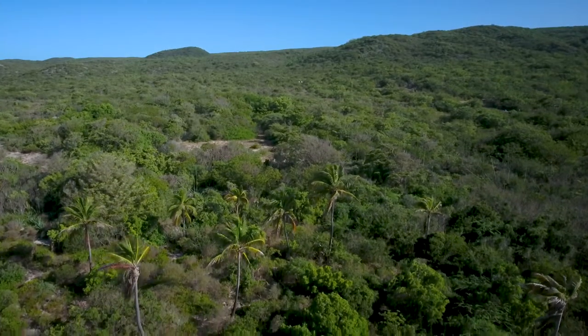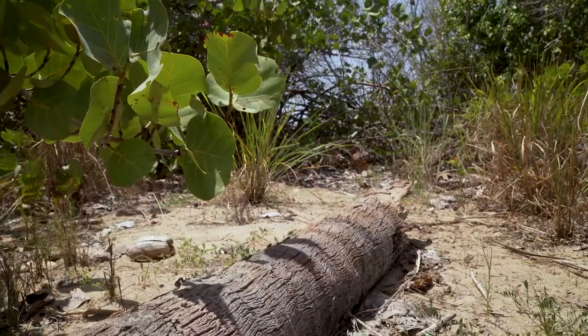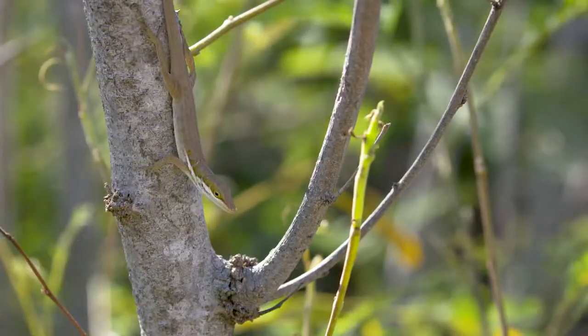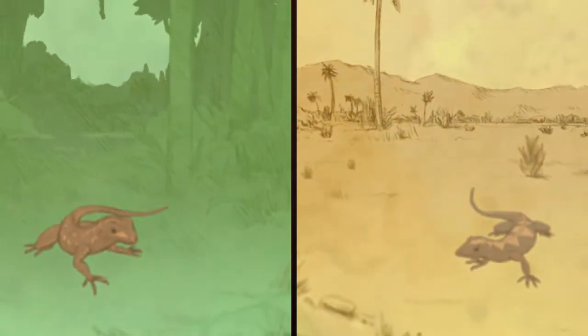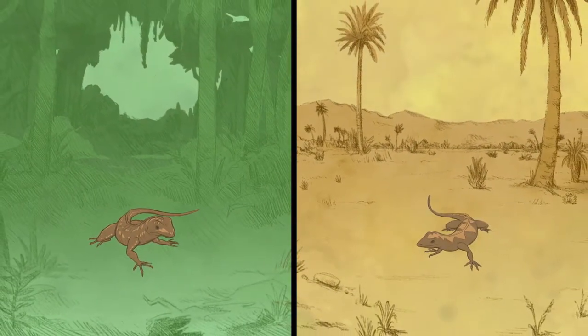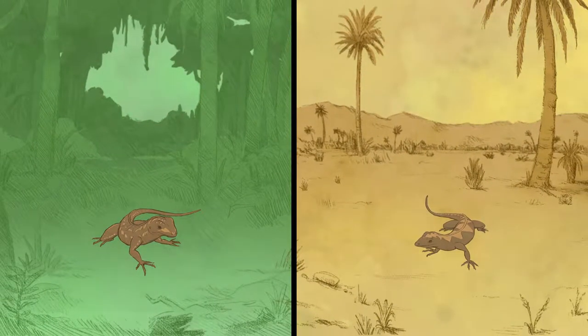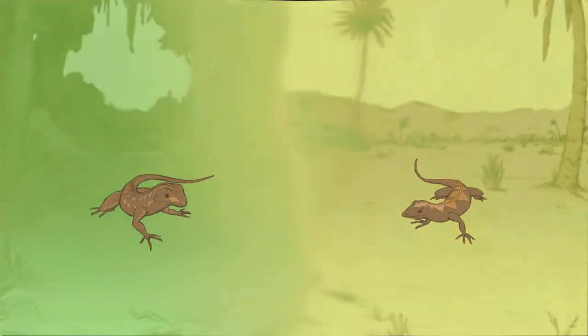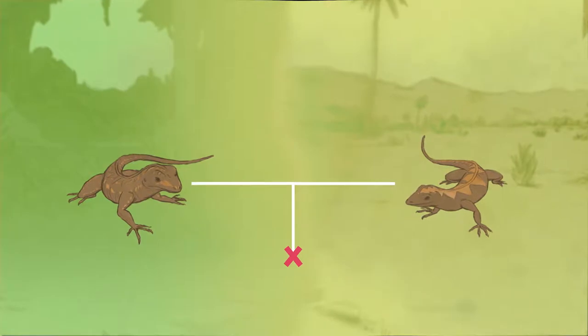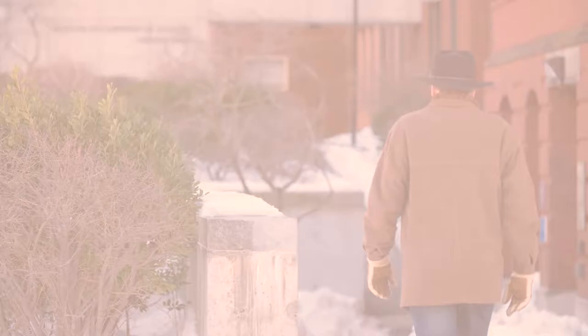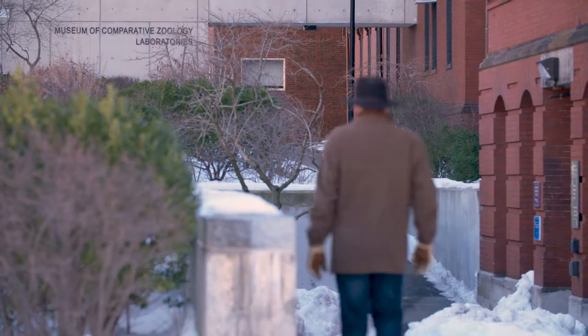More recently, we've come to understand that adaptation and natural selection play an important role in the evolution of new species. One such theory is ecological speciation, which says that adaptation to distinct habitats while populations are in isolation generates changes that, when brought back into contact, result in populations being infertile when they pair with one another. The current debate is which of these processes is more important: isolation or divergent natural selection.